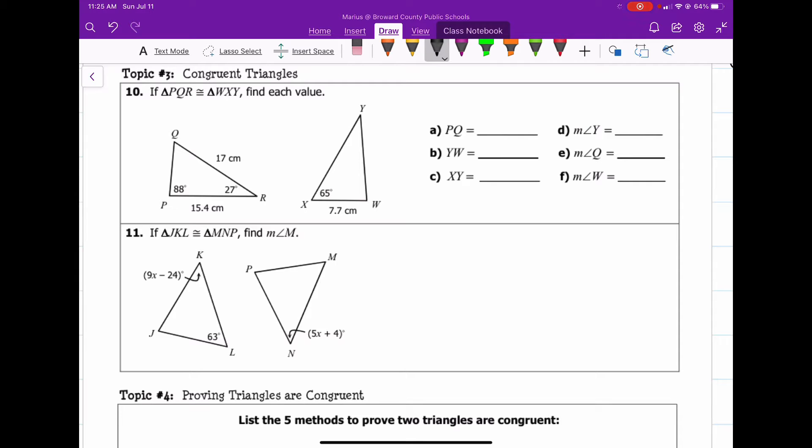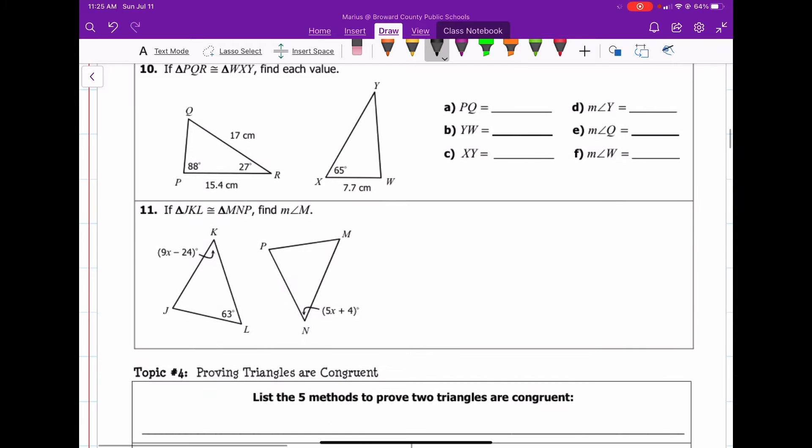Number one thing to really concern yourself with congruent triangles is the order in which the letters appear. And then what I would call stacking the angles, the names of the triangles on top of each other. So that way you can see which parts of the triangle of each triangle correspond to the other triangle.